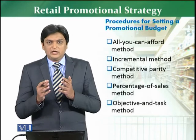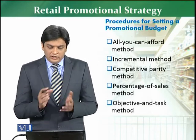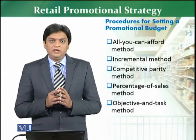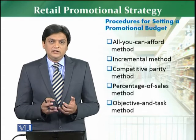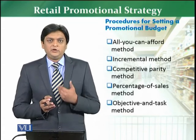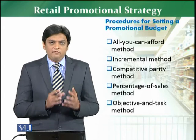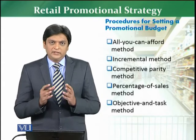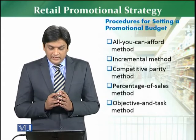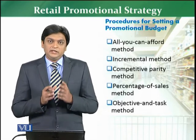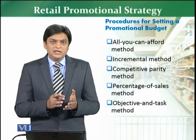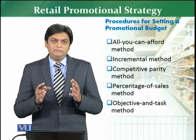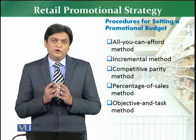The third method is the competitive parity method — you see how much the competition and the industry is spending, and decide accordingly. The percentage of sales method is the most commonly used method in the retail sector — for example, deciding to spend 4%, 3%, or 5% of sales on promotion. Then there is the objective and task method, where the budget is decided based on what objective and task you want to achieve.